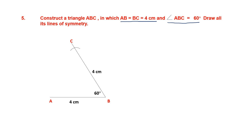From C, draw a line to A to complete the triangle. This is an isosceles triangle with AB equal to BC. The line of symmetry starts from the vertex at the angle B and bisects it, because in an isosceles triangle the line of symmetry bisects the angle contained by the two equal sides.